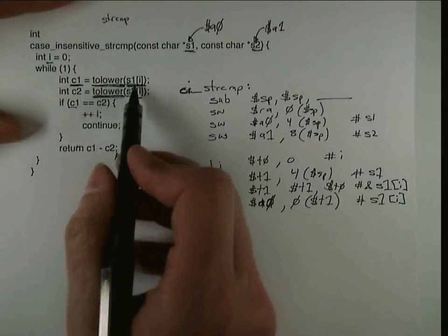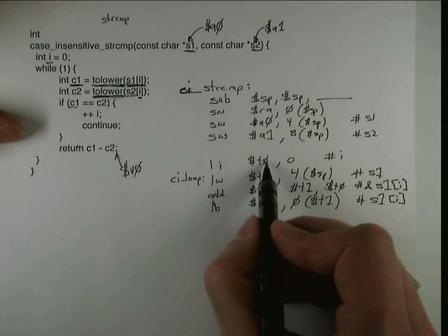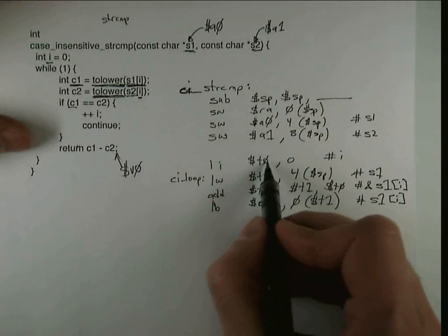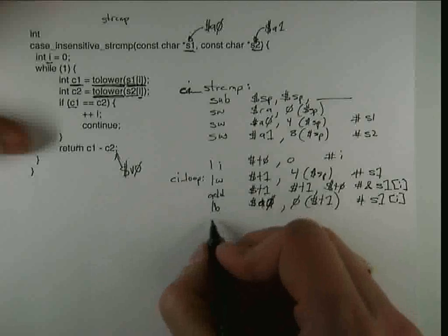So that gets me S1[I]. I'm not quite ready to call tolower because I have this value T0, which I haven't saved yet. And T0 being a caller saved register is getting killed by the call, the jump and link.